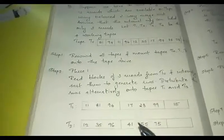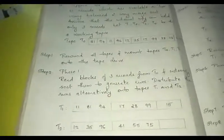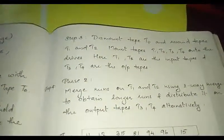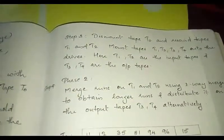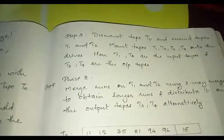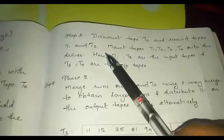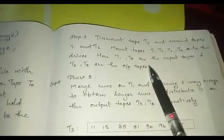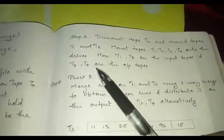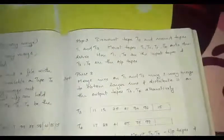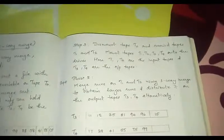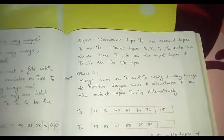Next, unmount tape T0 since we no longer need it — we have generated runs and written them to T1 and T2. Rewind T1 and T2, and mount the four working tapes. Now T1 and T2 act as the input tapes, since they hold the generated runs, and T3 and T4 act as the output tapes.